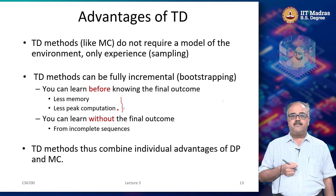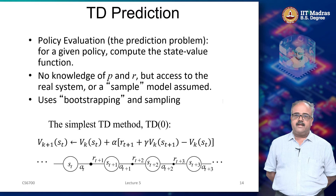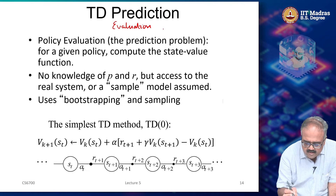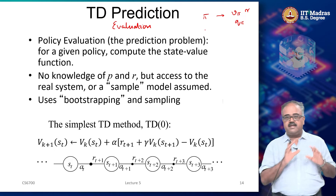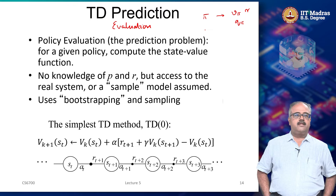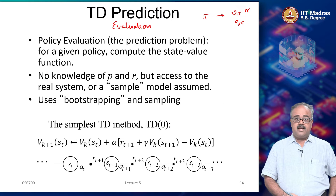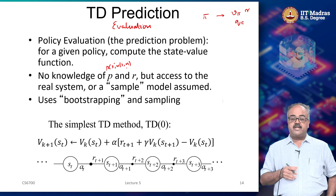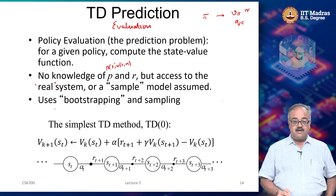TD methods combine the advantages of dynamic programming. Let us look at the simplest possible TD prediction algorithm. The prediction — sometimes called the evaluation task — is: given policy π, find V_π or Q_π. Just given a policy π, find the value function corresponding to it. We assume we do not know the transition probabilities p(s', r | s, a), we do not know expected rewards or transition dynamics, but we have access to a real system or a sample model.